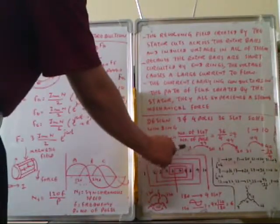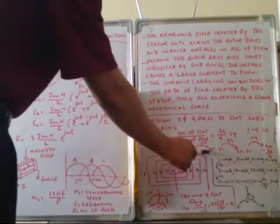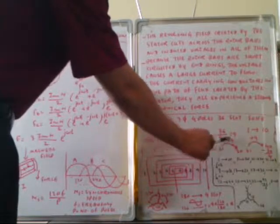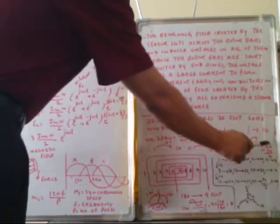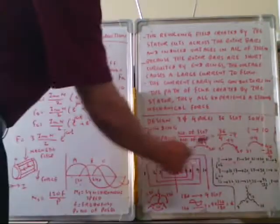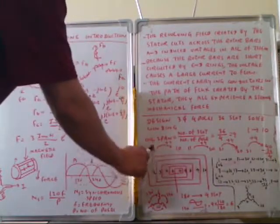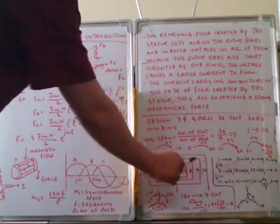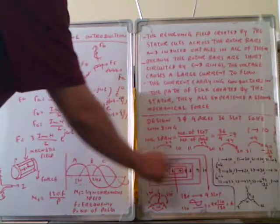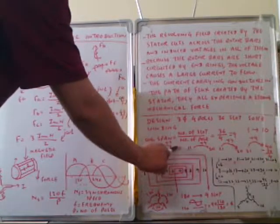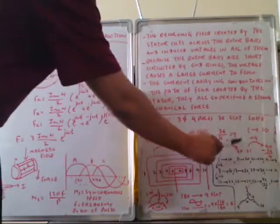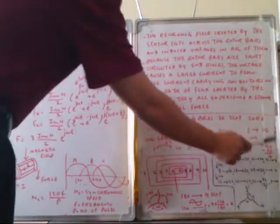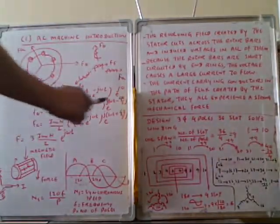This is the first pole. 11 plus 9 is 20, 21 plus 9 is 30, 31 plus 9 is 40. But we only have 36 slots, so we subtract 36 to get slot 4. We start from slot 1 to 10. This is the 3-phase construction: 1 to 10 for pole 1, 11 to 20 for pole 2, 21 to 30 for pole 3, and 31 to 4 for pole 4. So these 4 poles make one phase.